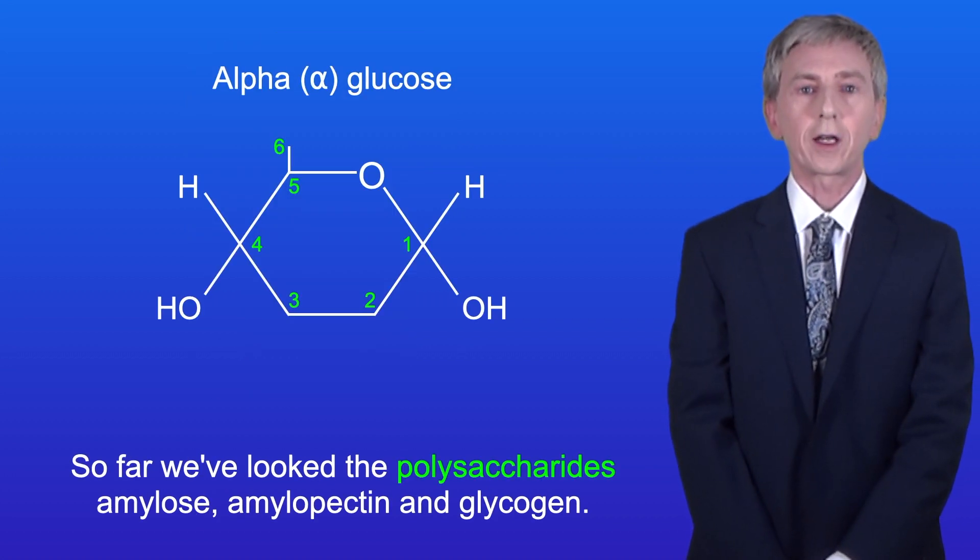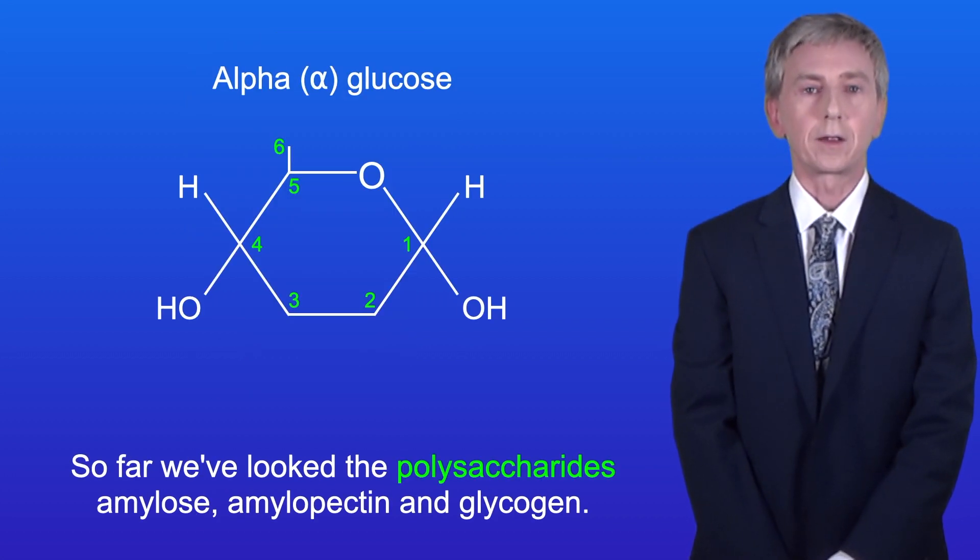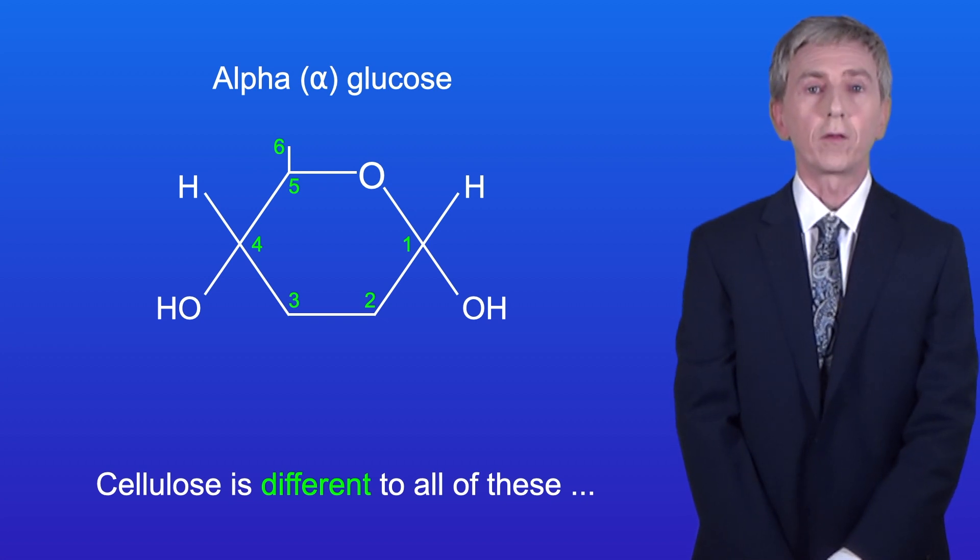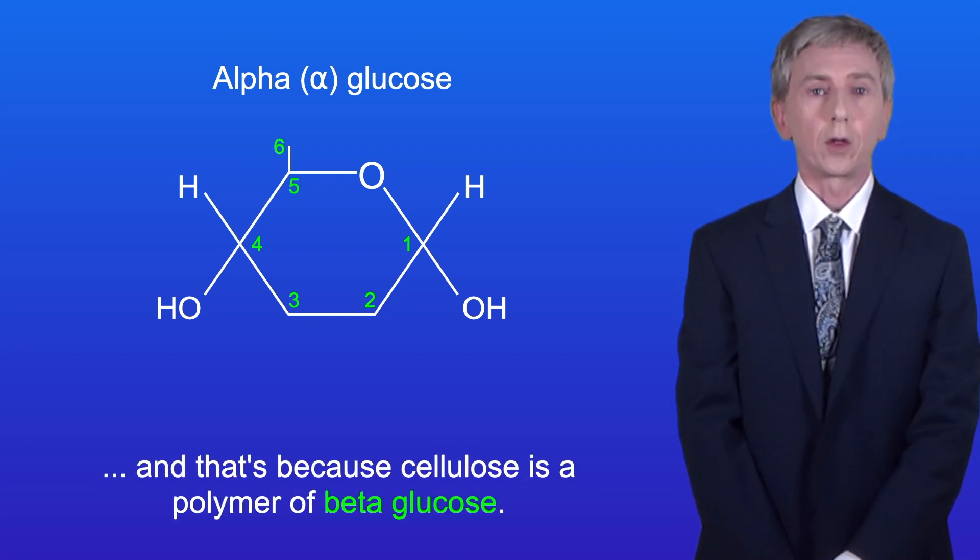So far we've looked at the polysaccharides amylose, amylopectin and glycogen. These polysaccharides are all polymers of alpha glucose. Now cellulose is different to all of these and that's because cellulose is a polymer of beta glucose.